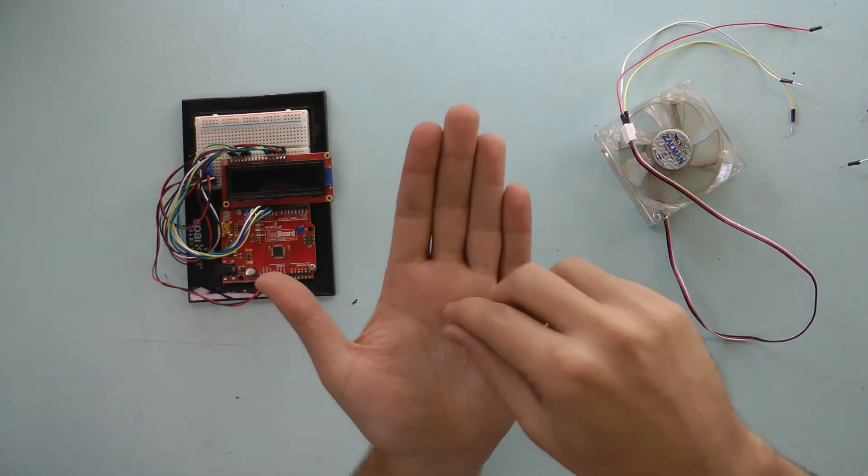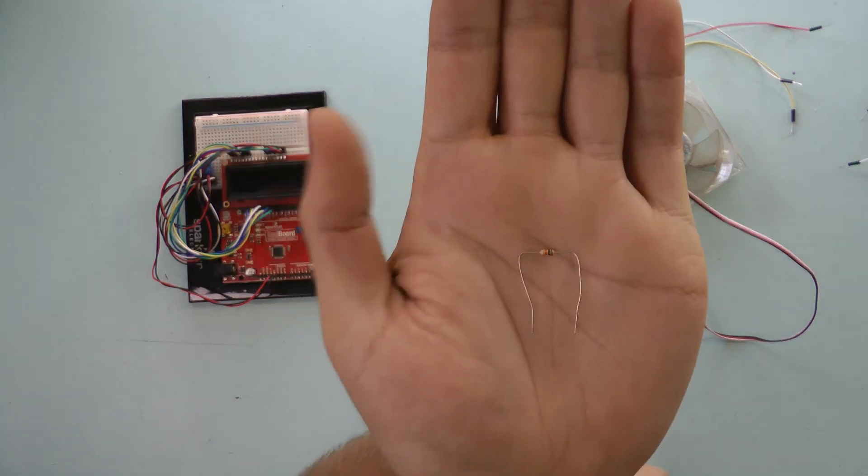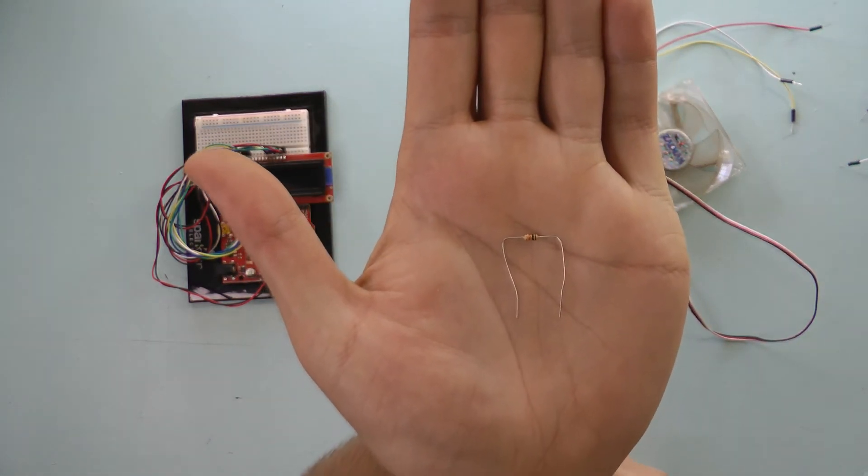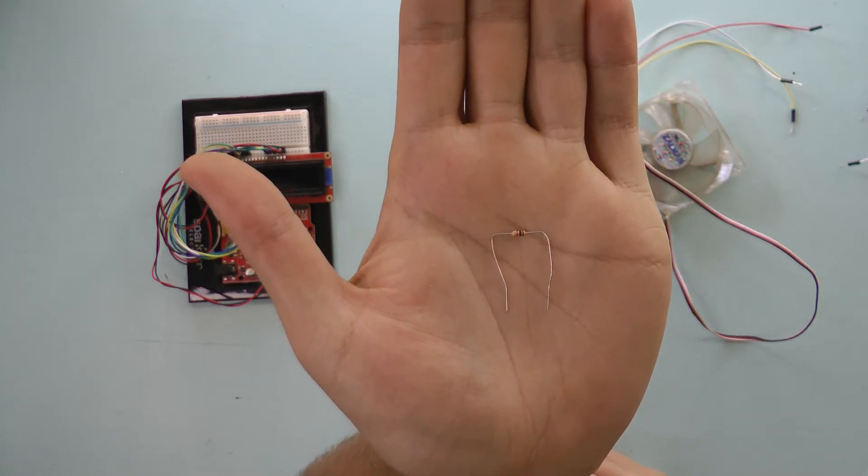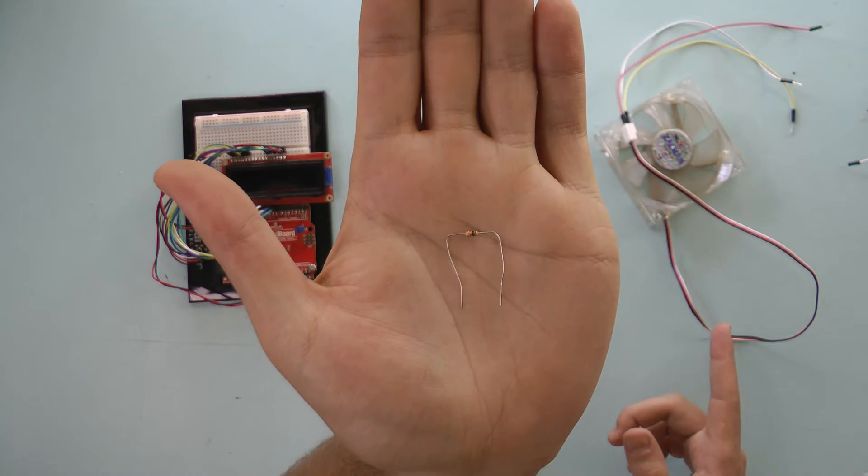You're also going to need a 330K resistor. This is what we will be using to pull up the voltage so that the PWM value from the fan doesn't float.